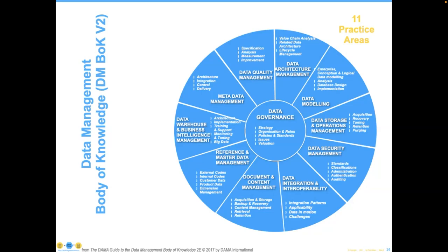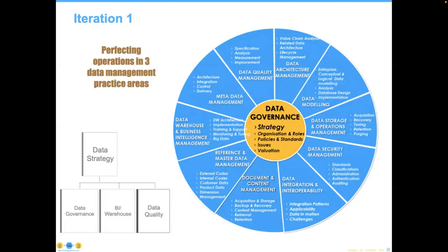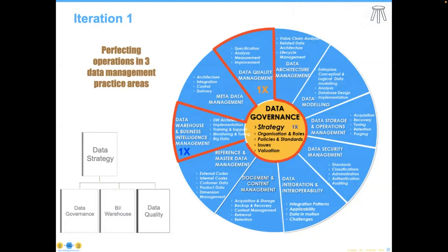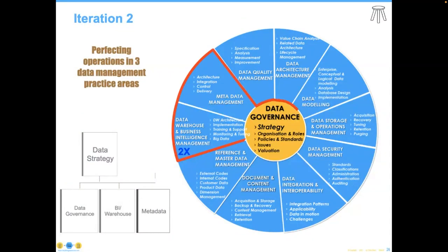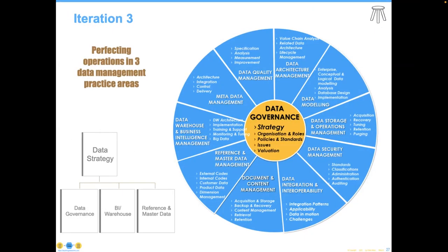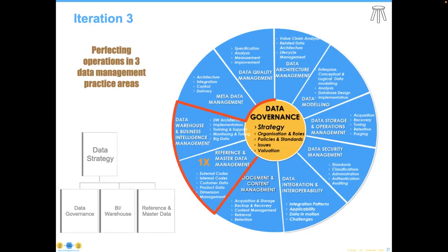Just wanting to do one of those 11 things is actually not a very good plan. It's better to think in terms of groups of three, because most data activities will encompass or touch at least three of these areas. For example, one organization's strategic approach involved one round of data governance, one round of data warehouse and business intelligence, and one round of data quality management. A second phase might move from data quality over to metadata — as Danny said, metadata is your friend. A third phase might incorporate reference and master data. Notice that data governance is practiced in every phase — it is absolutely central to data management.